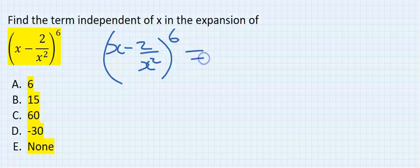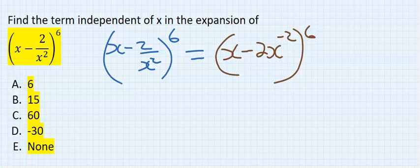You are going to rewrite this as (x minus 2x to the power of minus 2), everything to the power of 6.